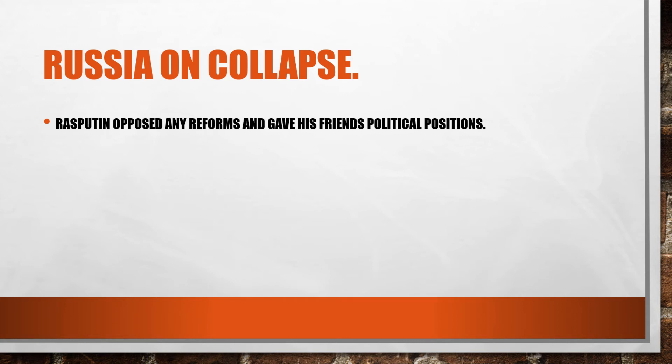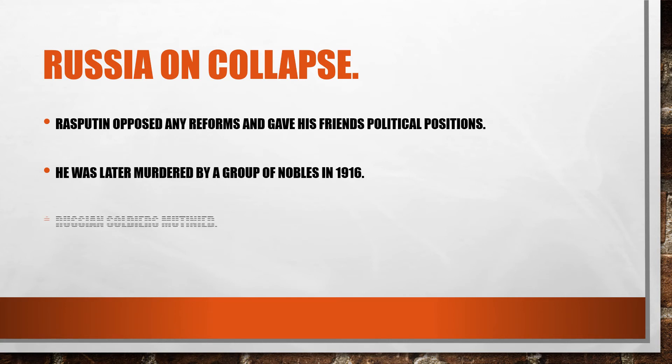Rasputin opposed any reforms or changes that were suggested and gave his friends political positions. He was later murdered by a group of nobles in 1916. By this point, Russia was already on the verge of collapse, and Russian soldiers began to mutiny — refusing to continue fighting and serving under the Czar.